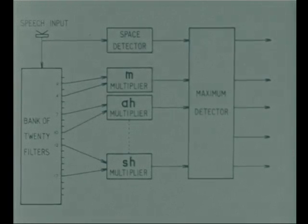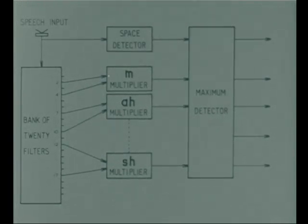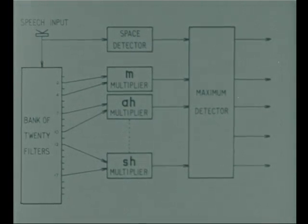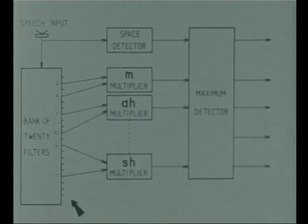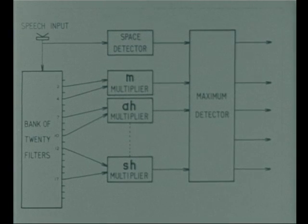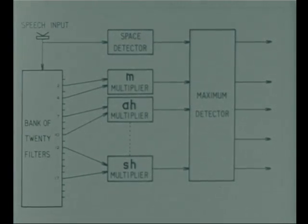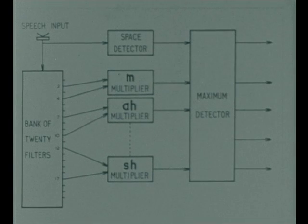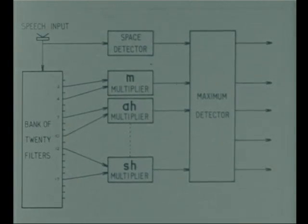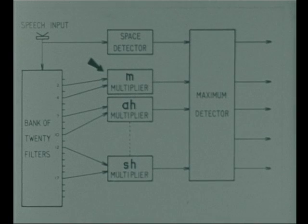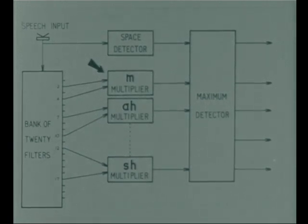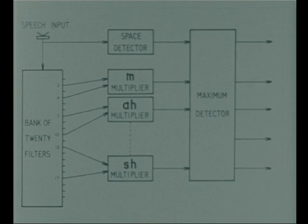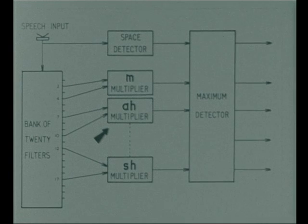The primary or acoustic analysis, which is here shown in detail, depends on conventional frequency analysis of the input. Twenty adjacent filters are used to make this analysis. The occurrence of a given speech sound is associated with maximum output in a particular pair of filters. For instance, the sound M is linked with filters 2 and 4. The vowel sound R is linked with numbers 7 and 10, and so on for the other sounds.